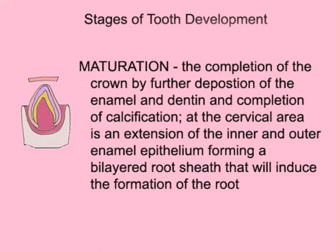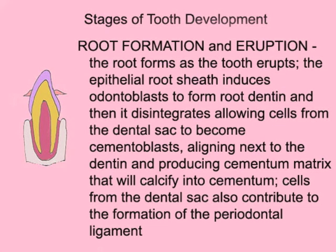At the cervical area is an extension of the inner and outer enamel epithelium forming a bilayered root sheath that will induce the formation of the root. Root formation and eruption occur at the same time. The epithelial root sheath induces odontoblasts to form root dentin and then disintegrates, allowing cells from the dental sac to become cementoblasts, aligning next to the dentin and producing cementum matrix that will calcify into cementum. Cells from the dental sac also contribute to the formation of the periodontal ligament.